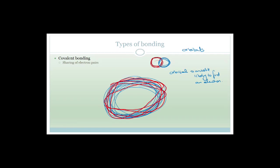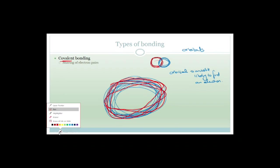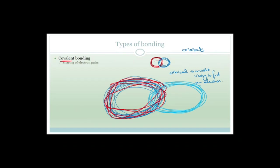If you've got two atoms with overlapping orbitals, they may have a sharing of electrons — and if they share electrons, we call this covalent bonding. Your covalent bonding depends on your electronegativity. Electronegativity is a measure of how strongly an atom holds onto its electrons. With covalent bonding, these two atoms have more or less the same electronegativity — they hold onto the electrons with roughly the same amount of energy.